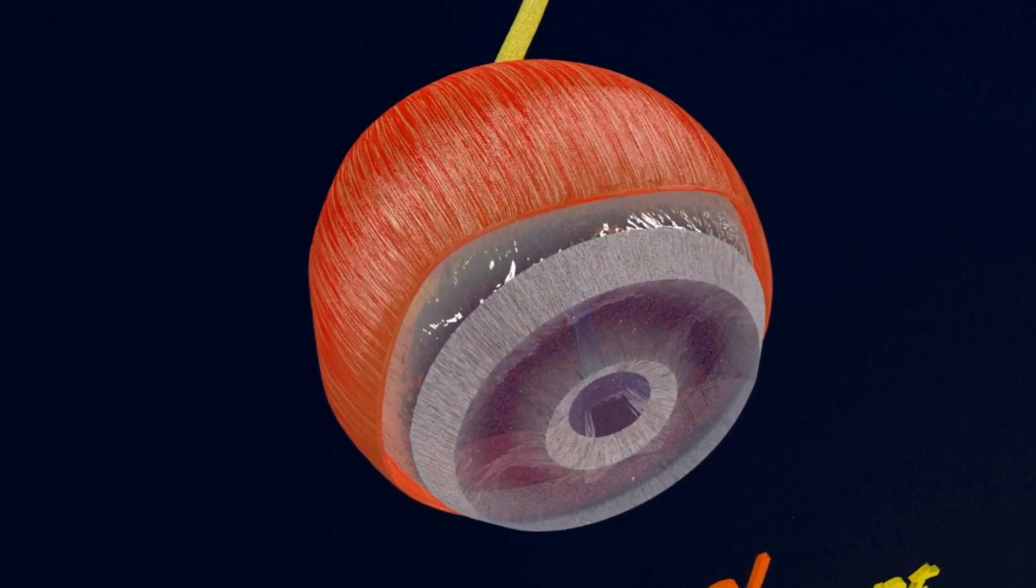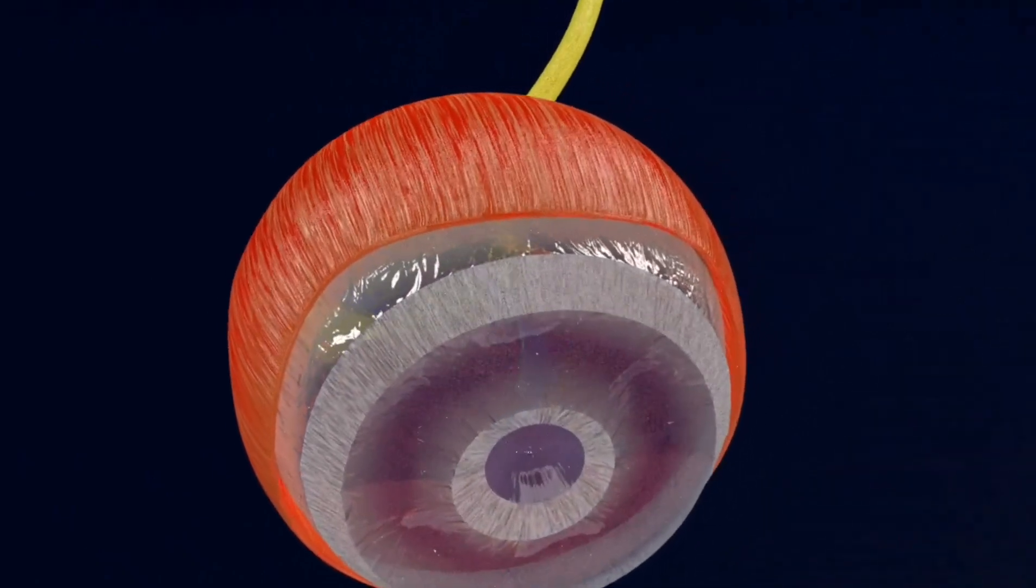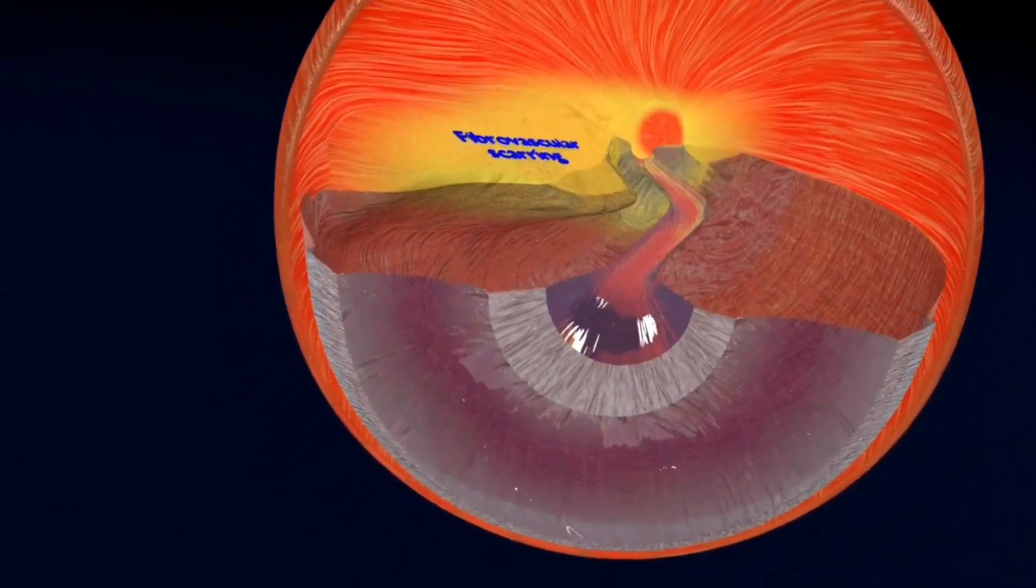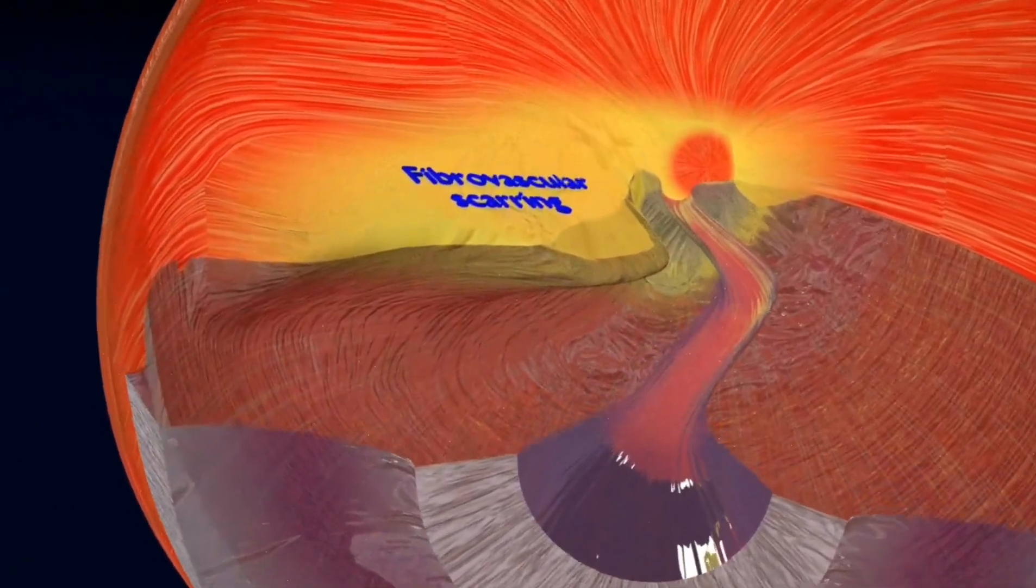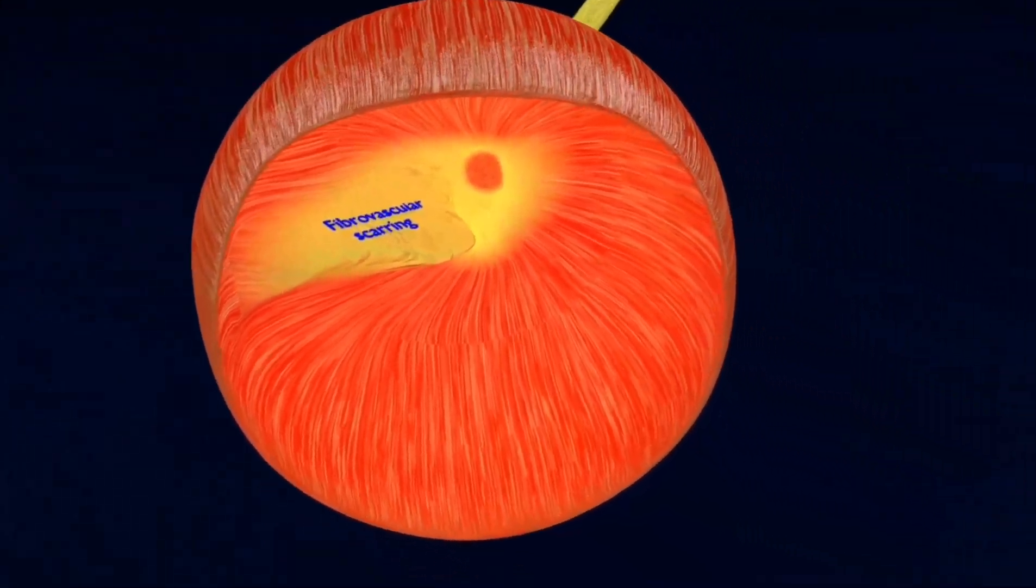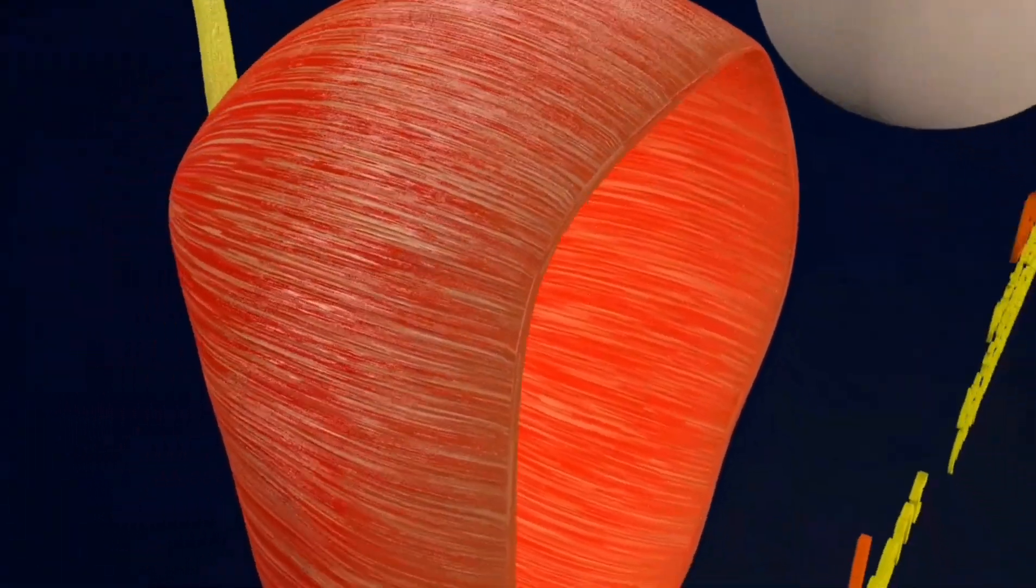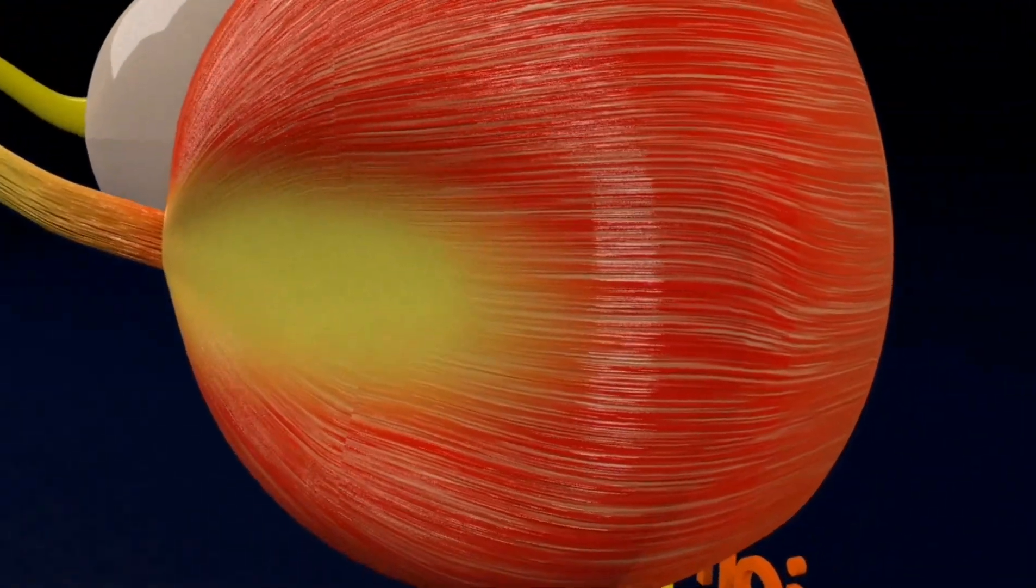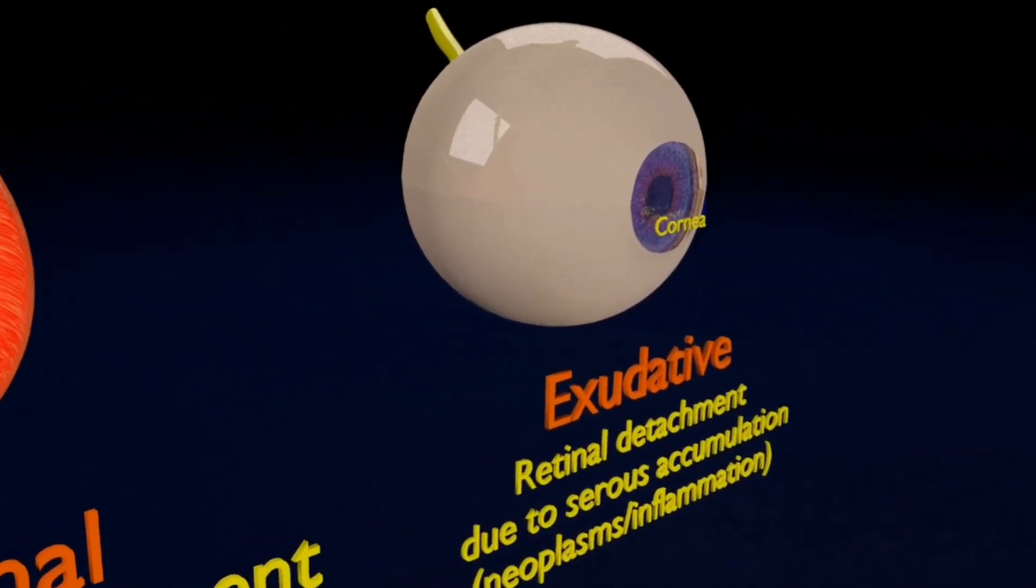This leads to detachment from the outer choroid layer. Tractional retinal detachment happens if scar tissue on your retina pulls your retina away from the back of your eye. RTD or retinal tractional detachment is the separation of neurosensory retina from the underlying retinal pigment epithelium due to the traction resulting from membranes in the vitreous or over the retinal surface. The most common cause of RTD is diabetes mellitus.